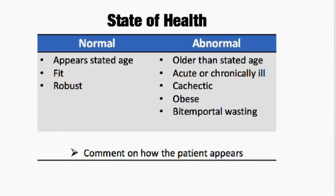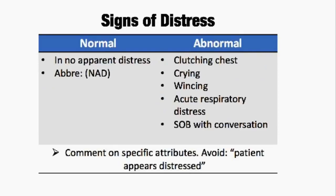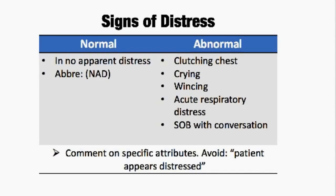When we're talking about signs of distress, we're looking at: are they tearful, crying, wincing? Are they in acute respiratory distress? Are they short of breath with conversation? A normal finding would be that they're in no apparent distress, abbreviated very commonly as NAD in the literature and in your medical notes. So you can use the abbreviation NAD.